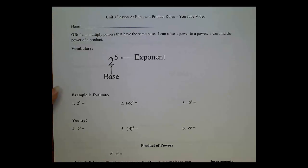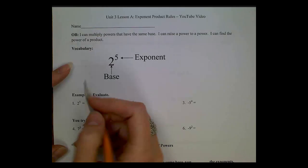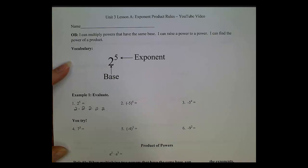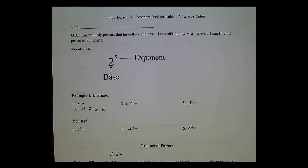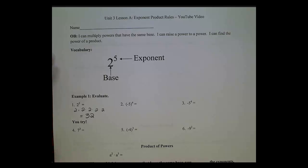Let's take a look at our first examples. The directions say to evaluate, which means you're going to multiply it out to get a single number for your answer. Our first problem is 2 to the 5th power. Written out without exponents, this means 2 times 2 times 2 times 2 times 2. You can type this into your calculator, or use the caret button on a graphing or scientific calculator to evaluate 2 to the 5th power. It should give you 32.